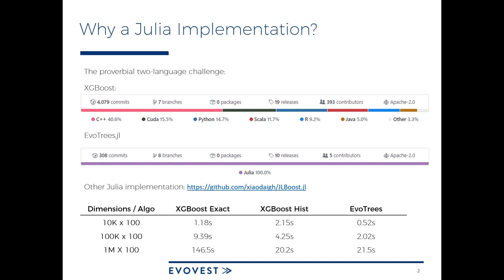There is also another Julia implementation for gradient boosted trees, GLBoost. A difference with EvoTrees is that GLBoost is using the exact method, whereas EvoTrees uses the histogram method. On the table on the bottom of the screen, you can see that EvoTrees perform fairly well compared with the XGBoost histogram method, which is the most efficient when dealing with large datasets.